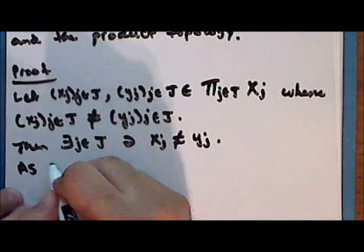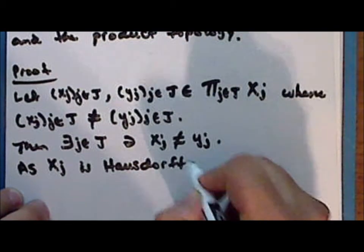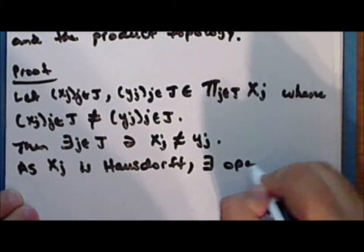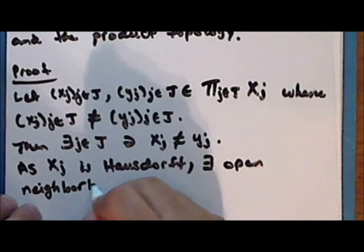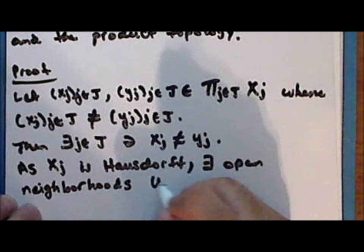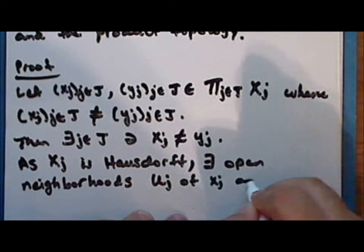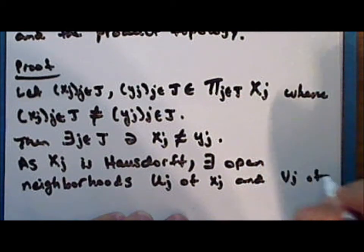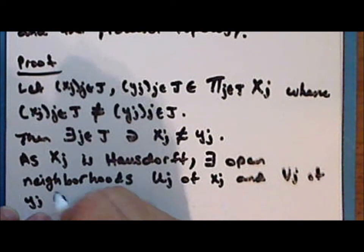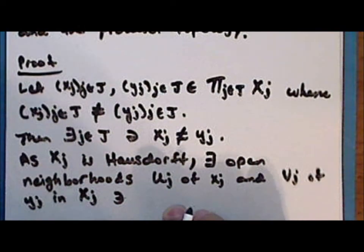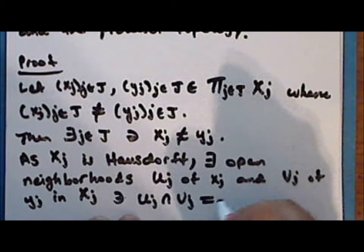Now, as the factor space x sub j is Hausdorff, there exist open neighborhoods u sub j of the point x sub j and v sub j of the point y sub j in the factor space x sub j, such that the intersection of the neighborhoods u sub j and v sub j is empty.